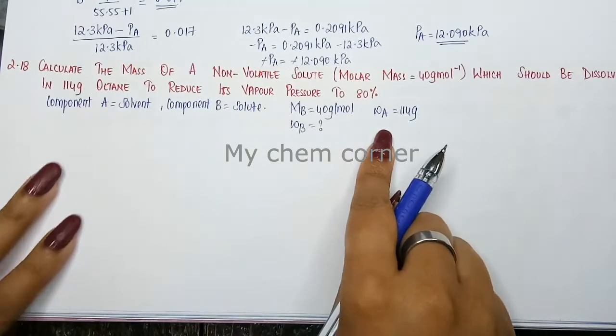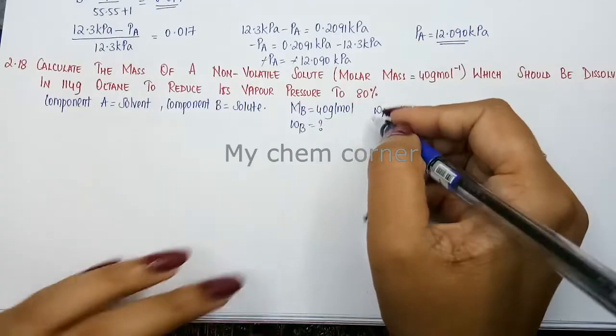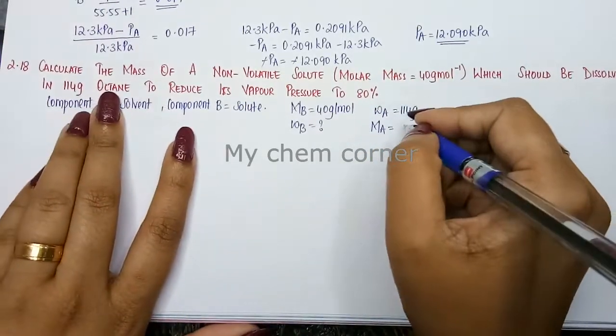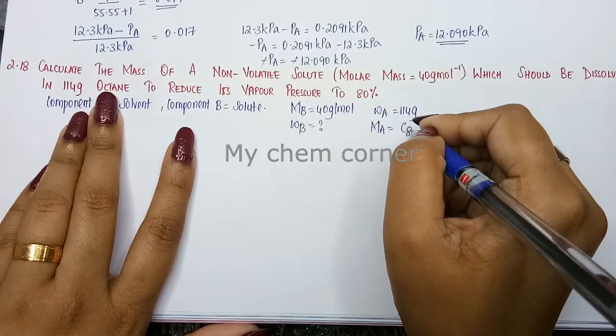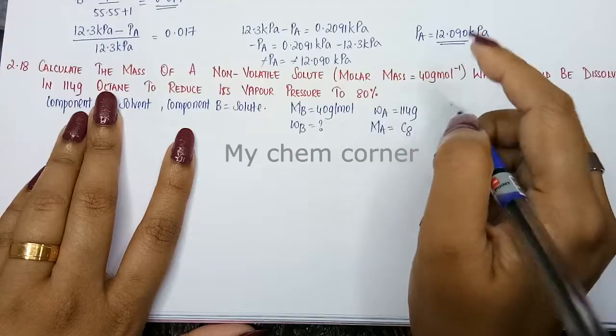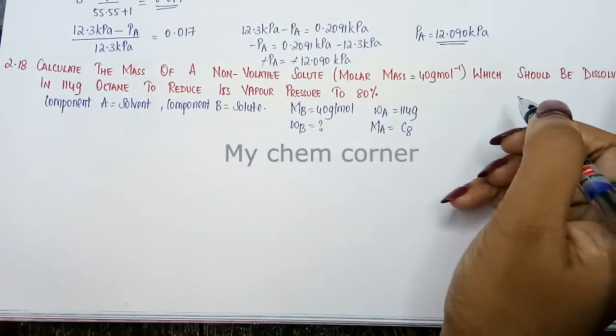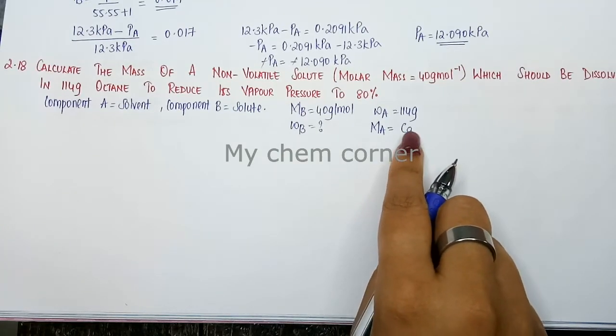Molar mass of octane: octane is C8, and it follows the formula Cn H2n+2. When n=8, that's going to be 8×2=16+2=18, so C8H18.